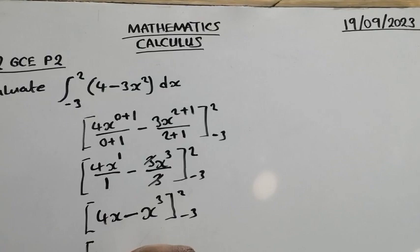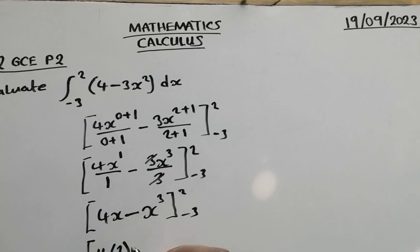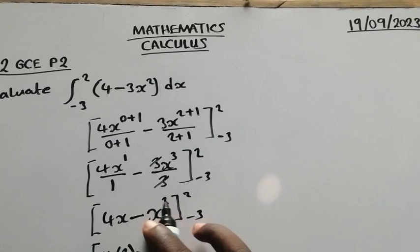So now if we do that, we are going to have 4 times 2 minus 2³,